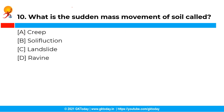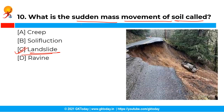The next question is: what is the sudden mass movement of soil called? The correct answer is option C, that is landslide. Landslide is the sudden movement of soil and it occurs due to instability of the land mass under the influence of gravity.